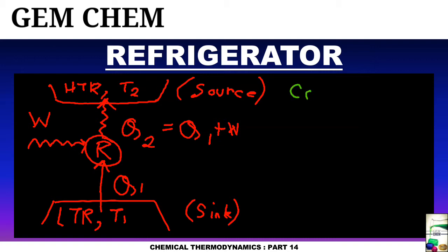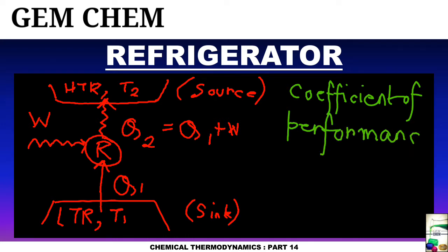Now here we will not derive any efficiency function, but we will derive coefficient of performance. And it is just the opposite of efficiency which we have seen. This is equal to Q by W, and here Q is Q1.